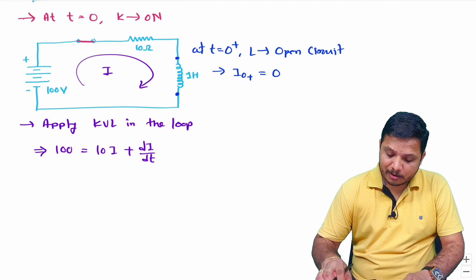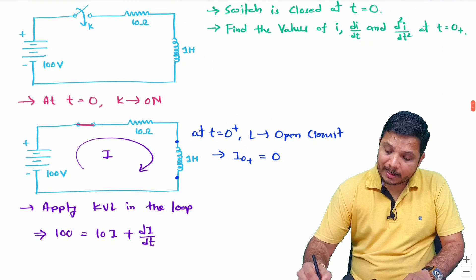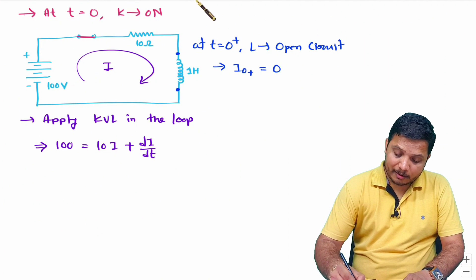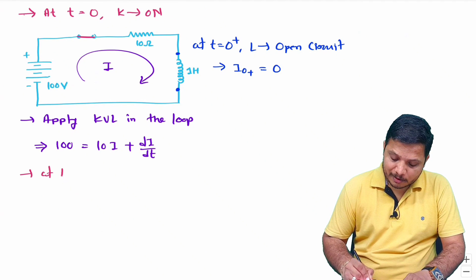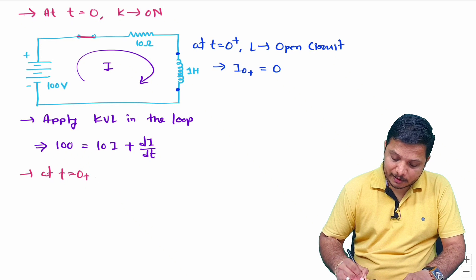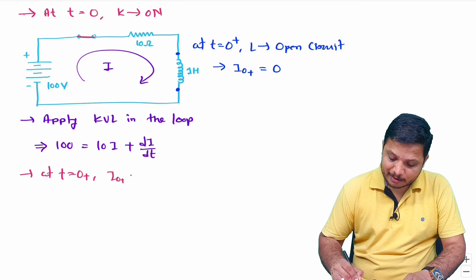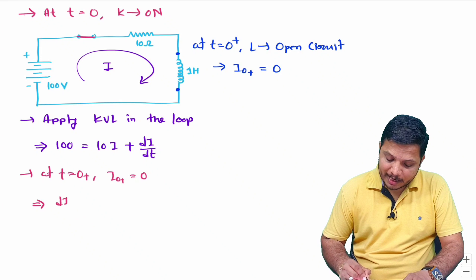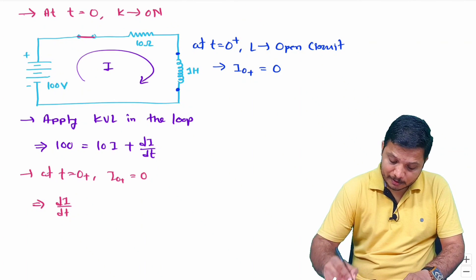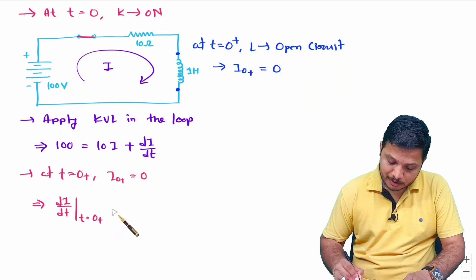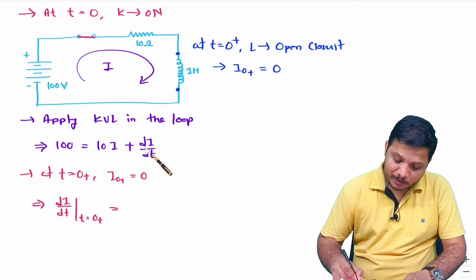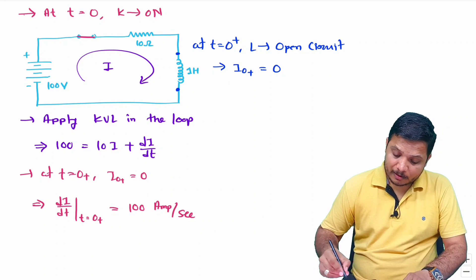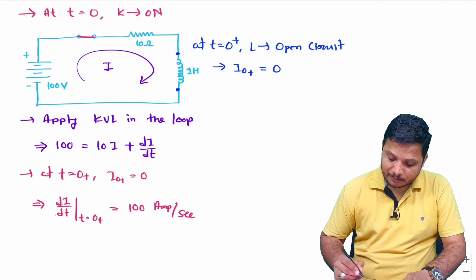This relation is essential to calculate di/dt and d²i/dt². At t equals 0 plus, substituting i(0+) equals 0 into the equation, we get di/dt at t equals 0 plus equals 100 amperes per second. That is our second answer.